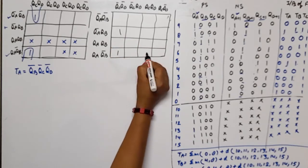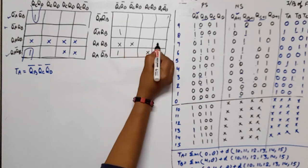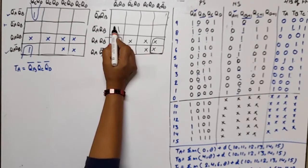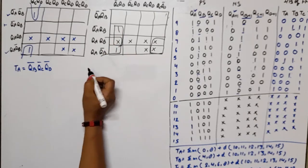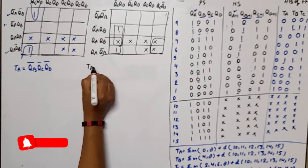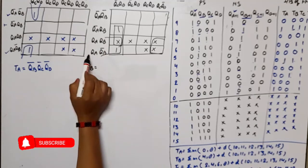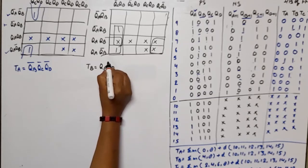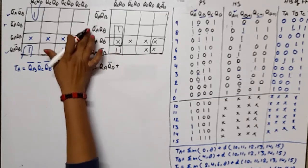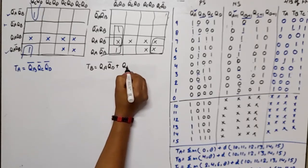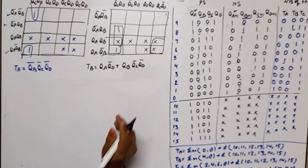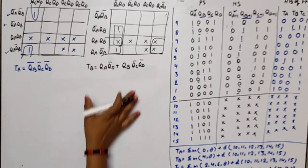For the K-map of TB, the minterms are 4 and 8, with don't cares at 10 through 15. We get one quad and one pair. From the quad: QA and QD̄ are common. From the pair: QB · QC̄ · QD̄. So TB = QA · QD̄ + QB · QC̄ · QD̄.